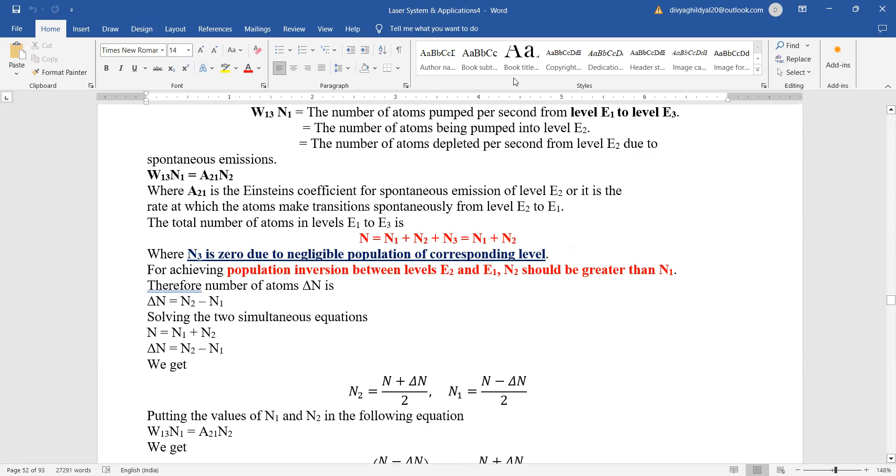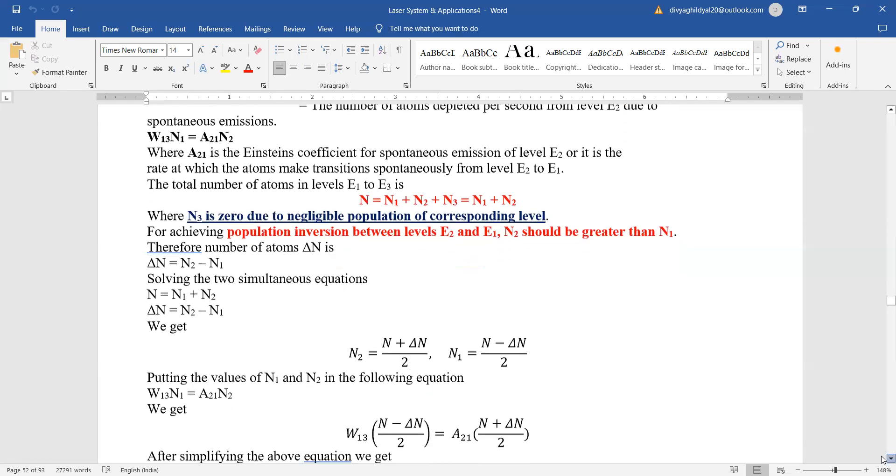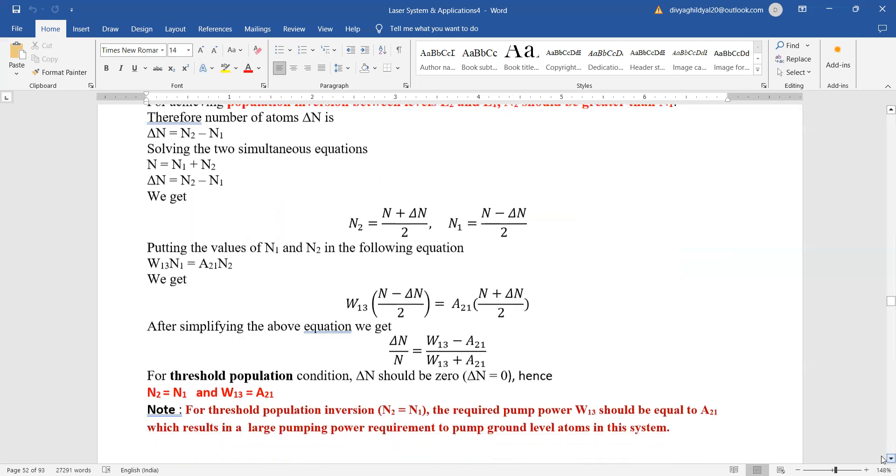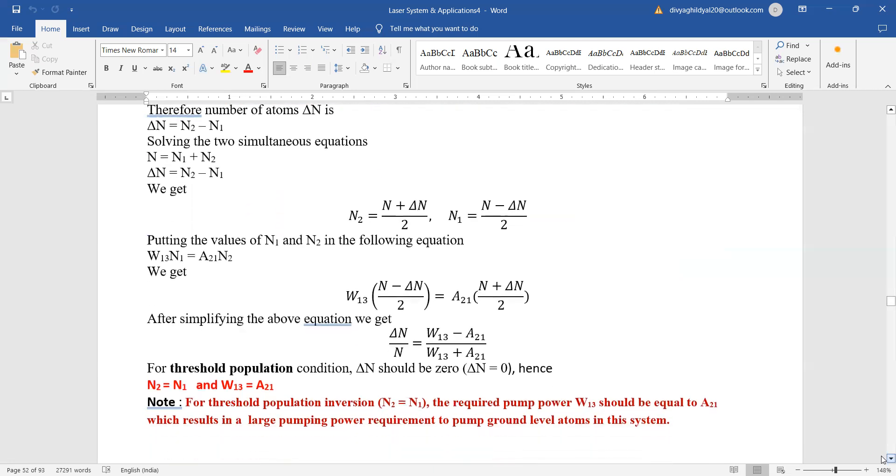We will write an expression for the total number of atoms, put it here in this value, and get the expression. So for threshold population inversion, the required pump power should be equal to A21.